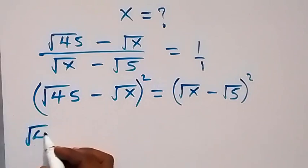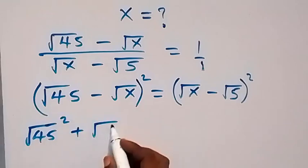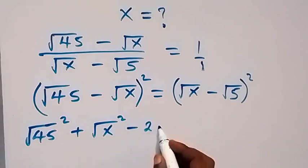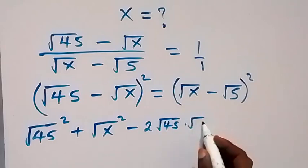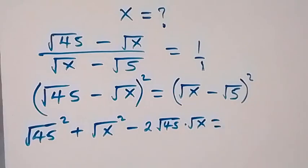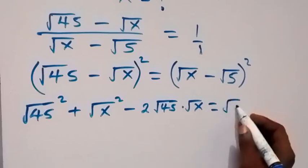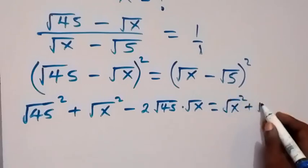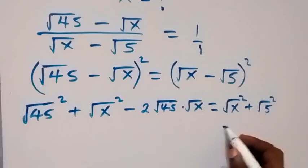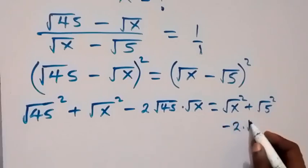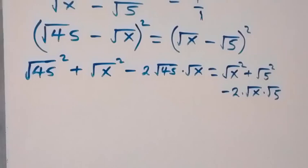When we square, the left side expands to: root 45 squared, plus root x squared, minus 2 times root 45 times root x. The right side expands to: root x squared plus root 5 squared, minus 2 times root x times root 5.